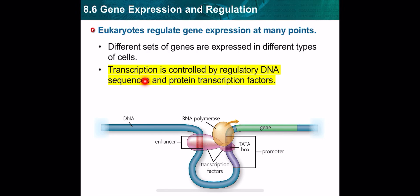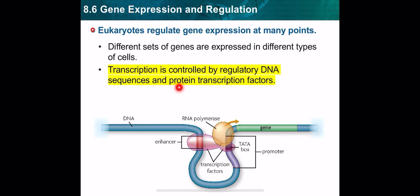Eukaryotes regulate transcription by regulatory DNA sequences. They have certain sequences considered regulatory sequences, like the TATA sequence. These regulatory DNA sequences are different from one gene to the other. There are also protein transcription factors — other proteins called protein transcription factors.